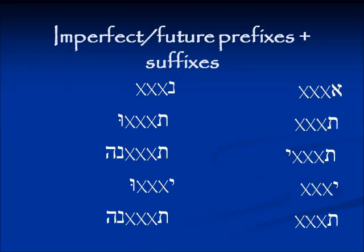The imperfect is formed by prefixes. The prefix for 'I will do something' is Aleph. The prefix for 'you will do something' is Tav — that's for the masculine singular. The feminine singular has a Tav prefix and also a Yud suffix. 'He will do something' is indicated by a Yud prefix, and we've talked about this in the Jots and Tittles presentation.